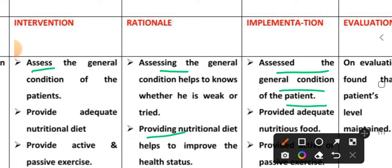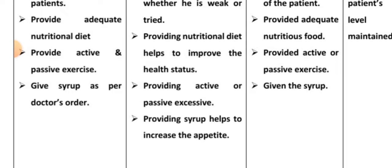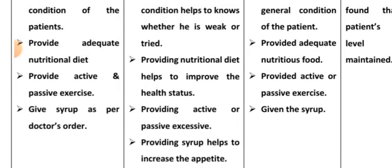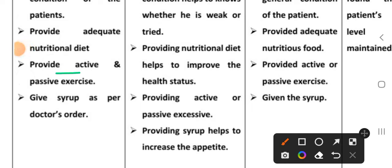Rationale: assessing the general condition helps to know whether the patient is weak or dull. Implementation: assessed the general condition of the patient. Second intervention: provide and educate about nutritional diet. Rationale: providing adequate nutrition food helps to improve health status. Implementation: provided adequate nutritious food to the child.